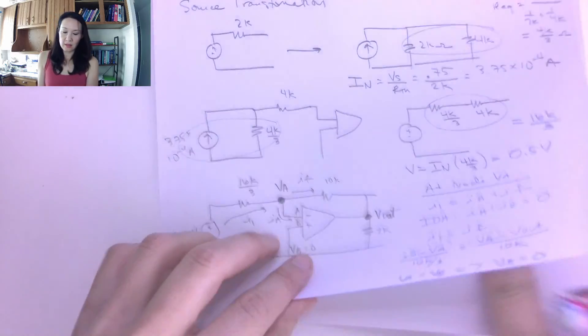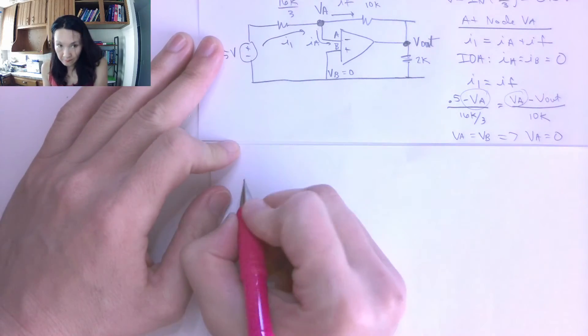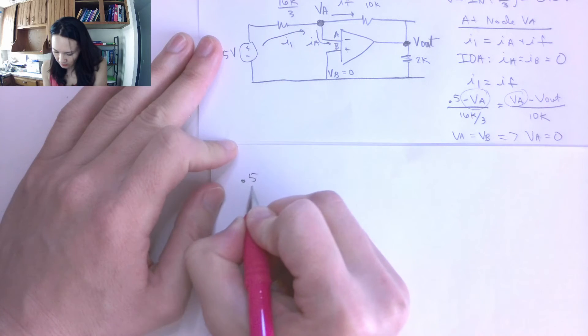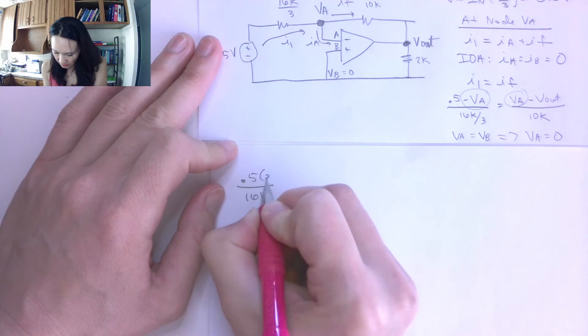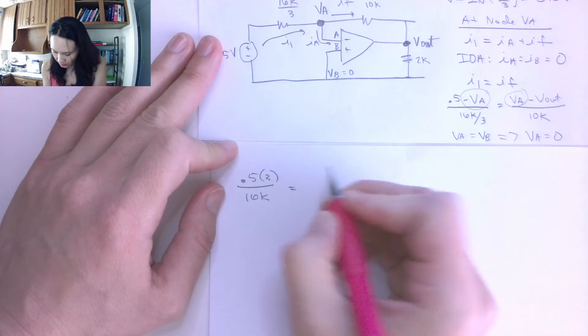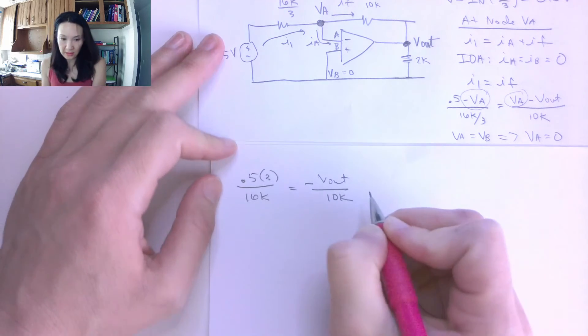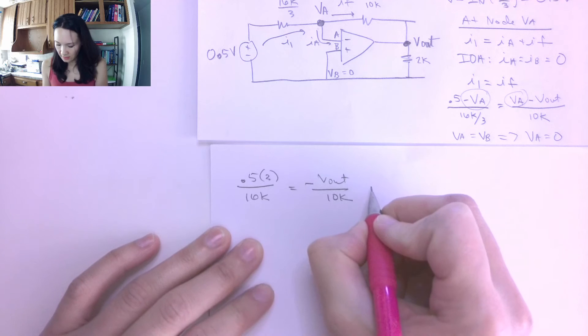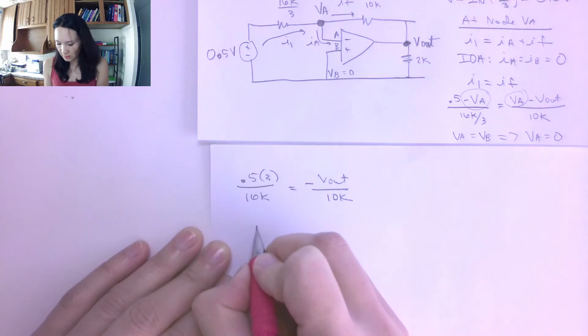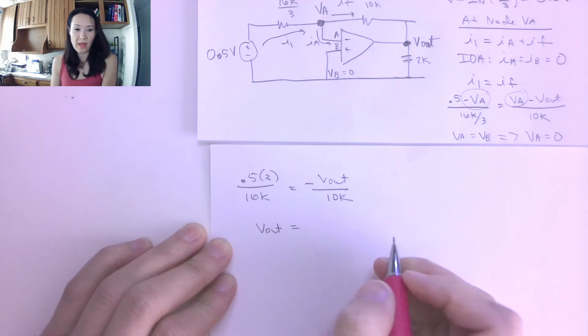So my equation becomes 0.5 over 16k, I'll put the 3 up here, because the reciprocal relationship equals negative Vout over 10k. Now, this thing, I can go ahead and write this in terms of Vout. Vout in terms of my Vin, which is 0.5,